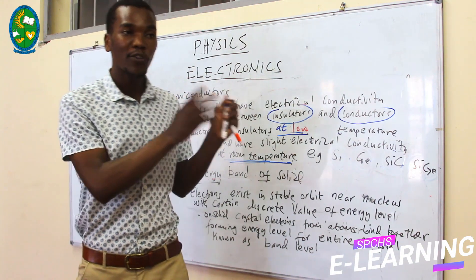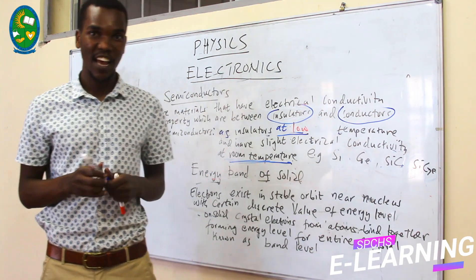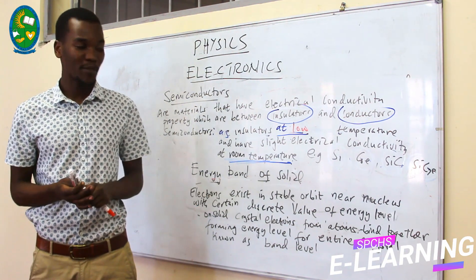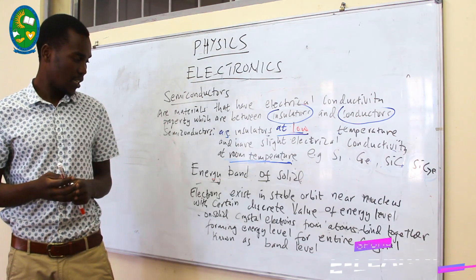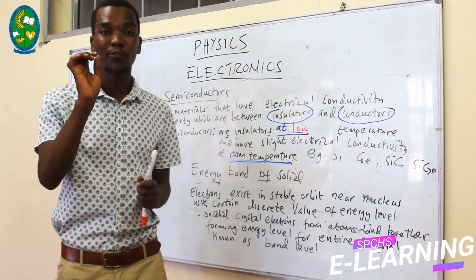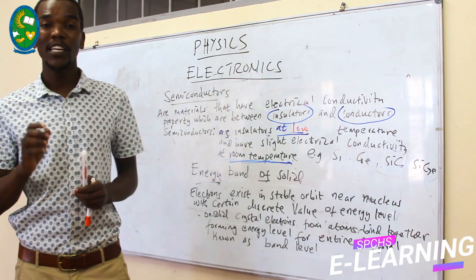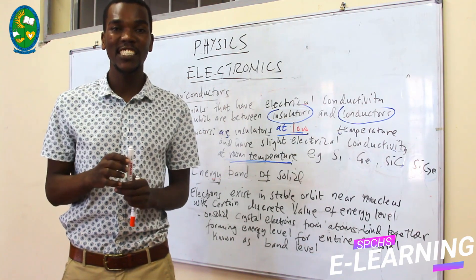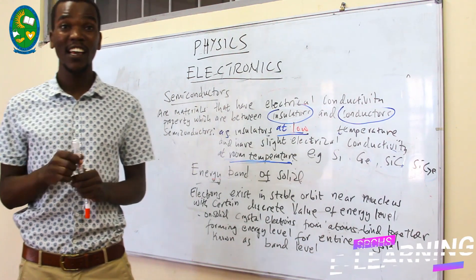To know about this further, you first have to understand about the energy band of the material. What is the energy band of the material? To understand further, you should know that for the energy band of a solid, you first have to start at the atomic level. In atomic level, every electron occupies its energy at the place it is from the nucleus.